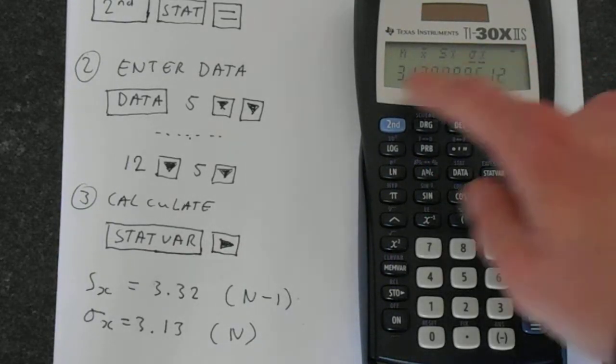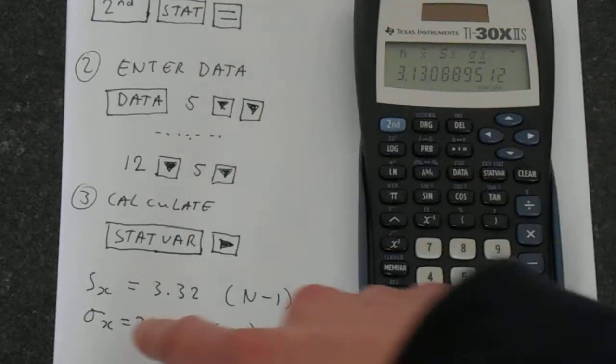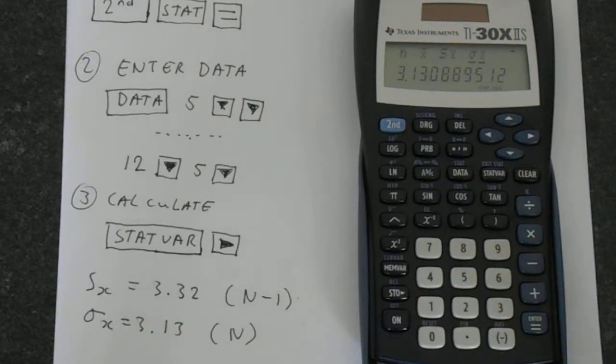Move down one more time, you've got this 3.13. This is the standard deviation when you're just dividing by N instead of N minus one.